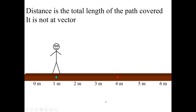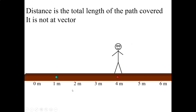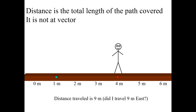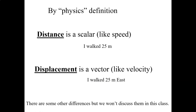Distance, on the other hand, is the total length of the path that you cover. In this case, they went seven meters total. Did he travel seven meters east? No, because he traveled west for a little while. So distance doesn't have a direction — distance is a scalar. It's the total length of the path you follow, whereas displacement is a vector — how far you end up from where you started and the direction.